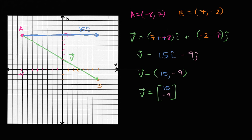And then the vector negative 9j — well, it's going to go down nine. Counting: one, two, three, four, five, six, seven, eight, nine. So negative 9j is going to look like that. And you see, if you take 15i plus negative 9j, you get our entire vector V. The X component is 15, the Y component is negative 9. Going from point A to B, your change in X increased by 15 and your change in Y decreased by 9. This just happens to be where we place this vector — as we do different things with vectors, we might shift them around, but the important thing is they keep the same magnitude and direction.